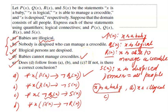Does D follow from A, B and C? The answer is yes, it follows from A, B and C. You can write the answer in your own language. With this I believe we have discussed predicate logic and quantifiers and solved a lot of problems. I thought of making this a problem-solving platform so that students have sufficient practice.